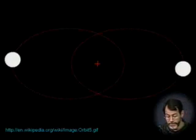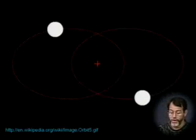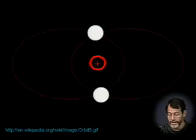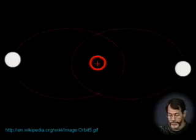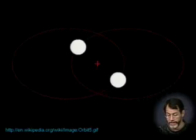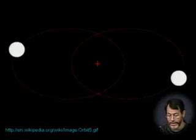Here we see two stars orbiting in a binary system. We say they orbit each other, but more accurately they orbit the center of mass, which is one of the foci of the ellipse that each of them travels on. You can even have them orbit in a circle, with both orbiting the center of mass at the center of the circle.